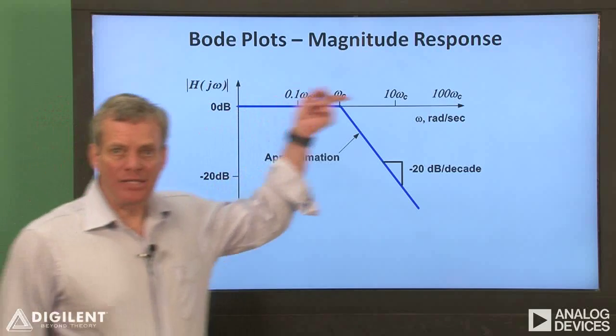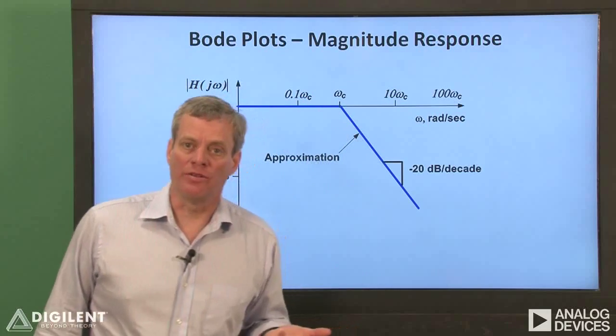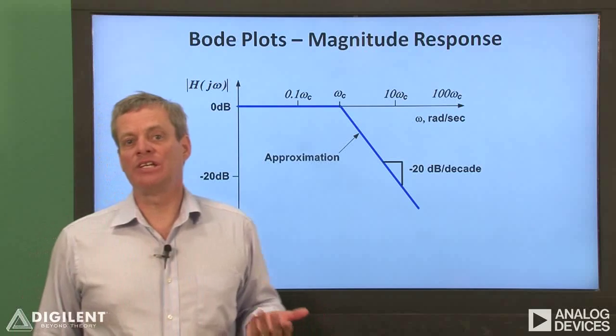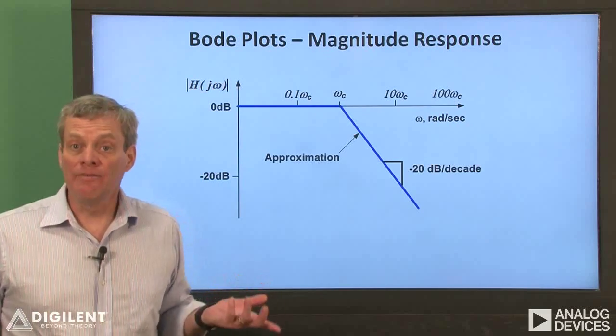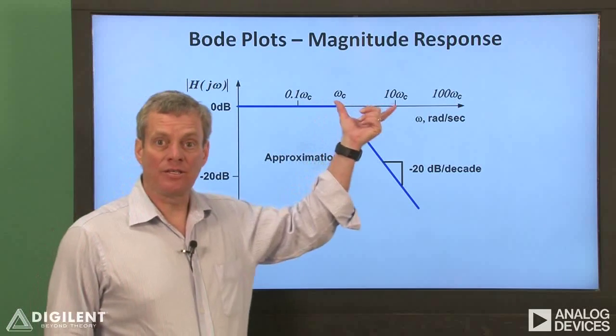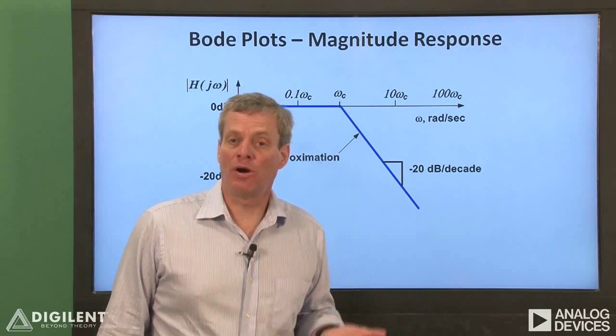The frequency axis on a Bode plot is also logarithmic. The frequency axis is typically expressed in decades or factors of 10 in frequency. Evenly spaced points on the frequency axis are orders of magnitude apart in frequency.